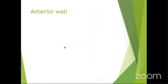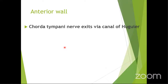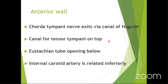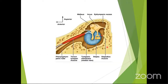The anterior wall has the exit of the chorda tympani and the canal for the tensor tympani. The tensor tympani does not arise solely from the anterior wall — it arises from the junction of the anterior and posterior wall. Below is the Eustachian tube opening, and the internal carotid artery is related anteroinferiorly.